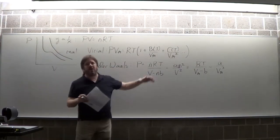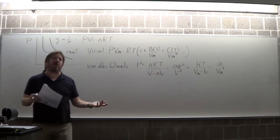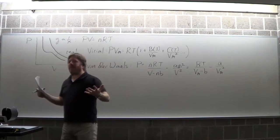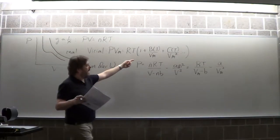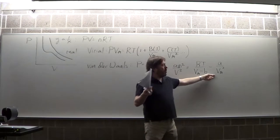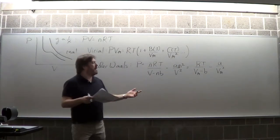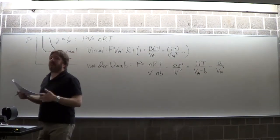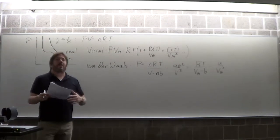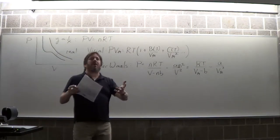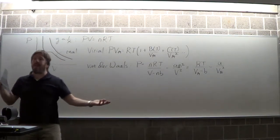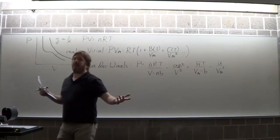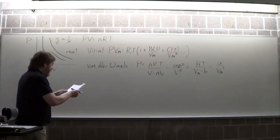Where Van der Waals wins the Nobel Prize is that the A and B parameters mean things — they can be related, as you've done in your homework. Remember, we're measuring pressure and temperature in a leather balloon, which looks like a cow's head, because that's where it came from, and from that I can know the size of an atom. That's quite surprising.